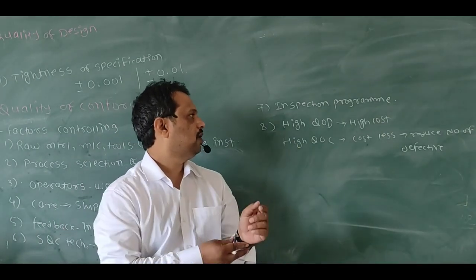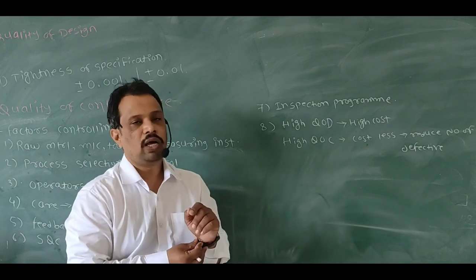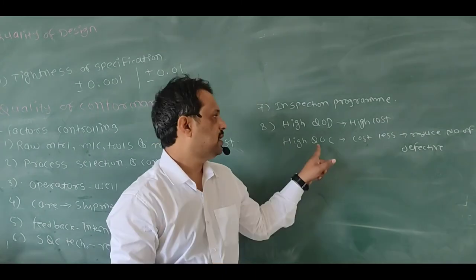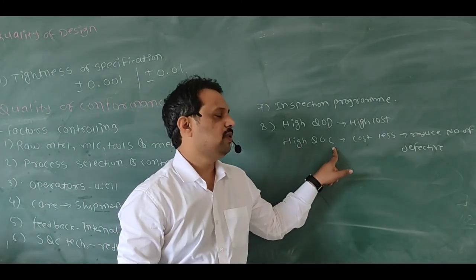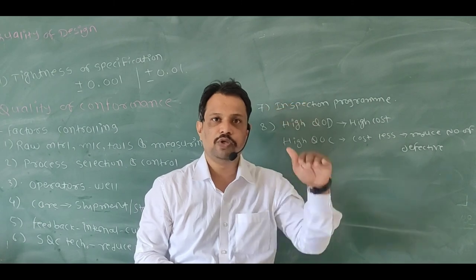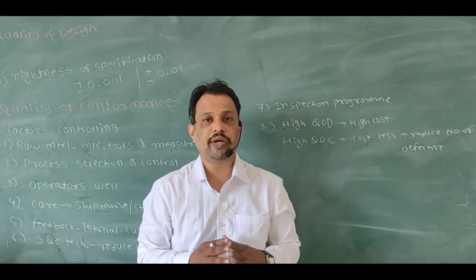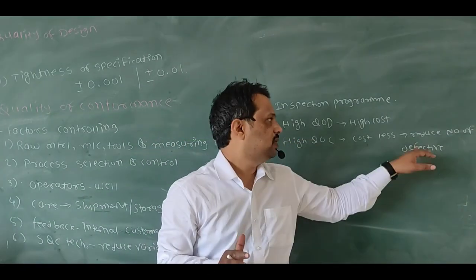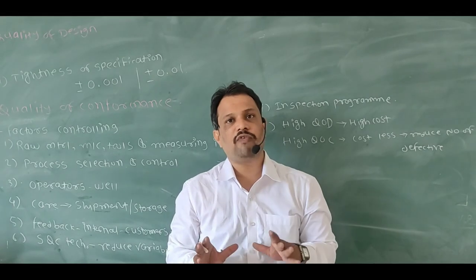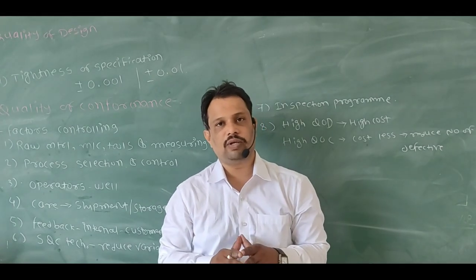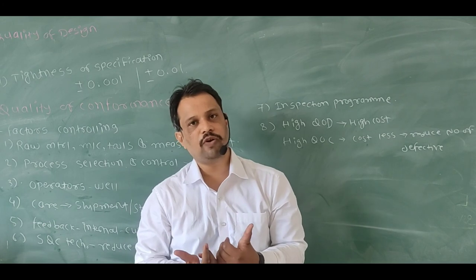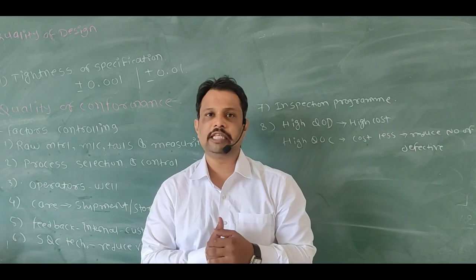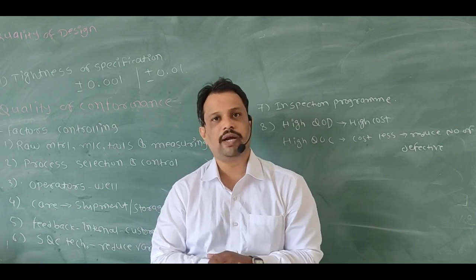Another point is high quality of design - high quality of design means that as your tolerance gets tighter, your cost of product is going to increase. But at the same time, high quality of conformance is going to reduce your cost. How will it happen? If you implement high quality of conformance, it reduces the number of defective parts, and ultimately if defective parts are reduced your cost of production will get reduced. If you like this video, please share, subscribe, and comment also. Thank you.